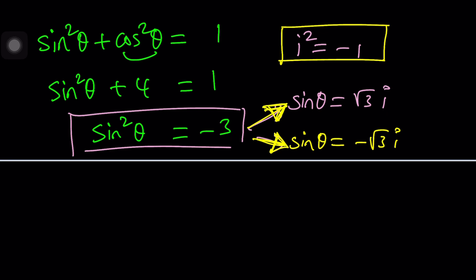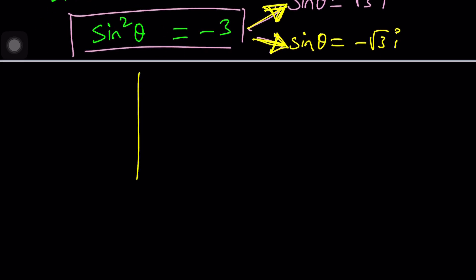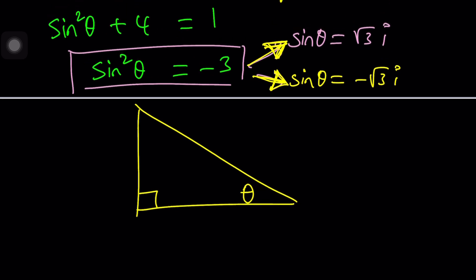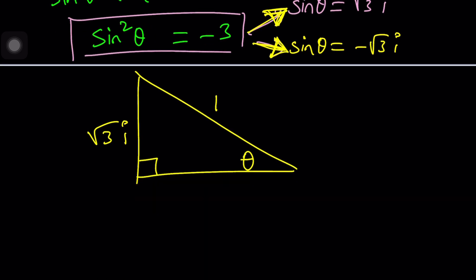We can draw a triangle maybe. That would help, even though we're in an imaginary world. Suppose this is your theta in the imaginary complex world. And we know that sine theta is root three i. So if we suppose this is root three i and this is one, and cosine is supposed to be two, so it should be this one. Interesting.